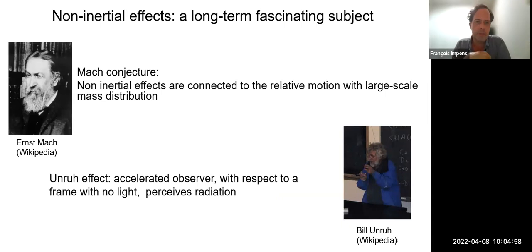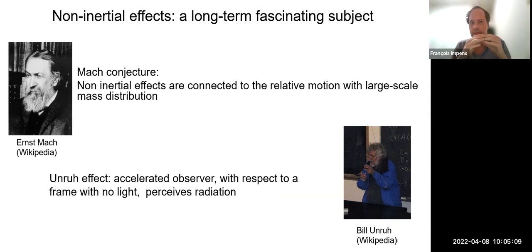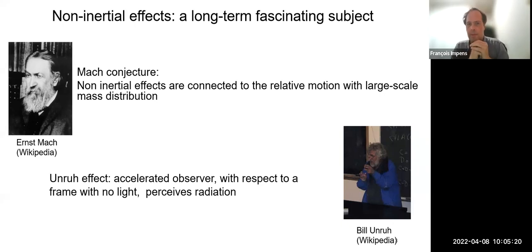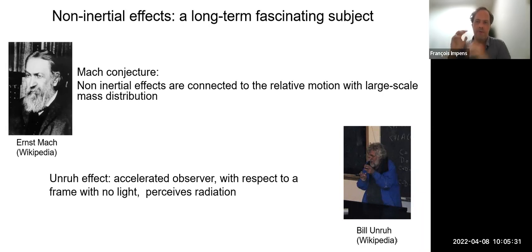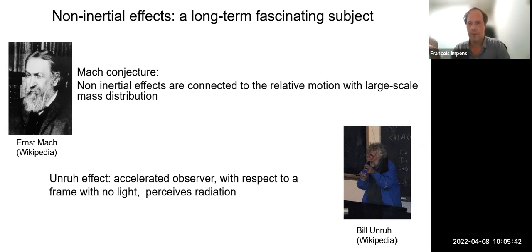Non-inertial effects have been for a long time a fascinating subject for physicists. Consider the Mach conjecture: what gives the non-inertiality of a frame is the relative motion with the distant mass distribution. For Mach, if you imagine spinning the distant stars — of course a fictitious experiment — then if you have an inertial frame and suddenly the stars begin to spin, this will give some non-inertiality to the frame. So the non-inertial feature would be related to the motion of the large-scale mass distribution.